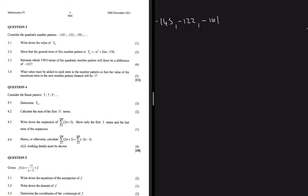So what we can do is find the first difference first, and then we find the second difference, and then we just add on to find the next term. So if we subtract minus 145 from minus 122, we get 23. And then if we find the difference between minus 101 and minus 122, we get 21. If we find the difference between 21 and 23, we get minus 2.